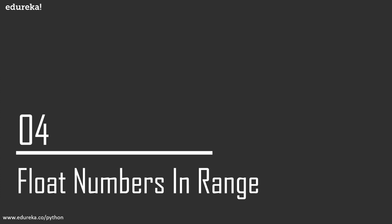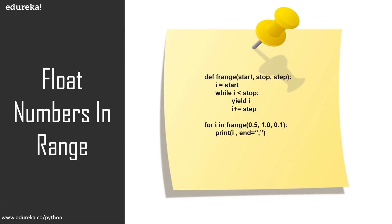Let's take a look at another example: float numbers in range. The range function does not actually support float or non-integer numbers, but there are ways to get around this and still get a sequence with floating point values. I'll show you a program using an approach to use floats in range. We have a function called f_range with three variables: start, stop, and step — which are basically the range parameters — and I have a logic for the function.